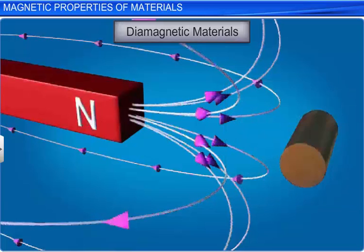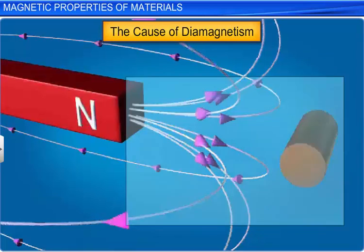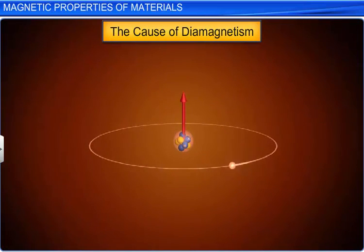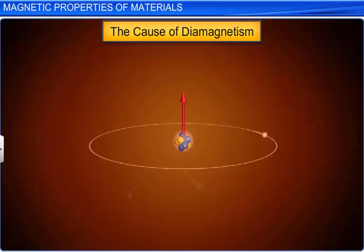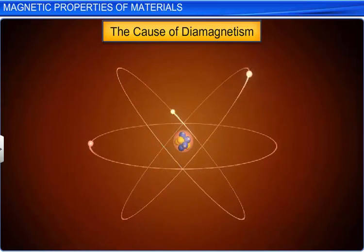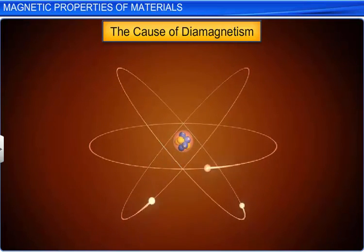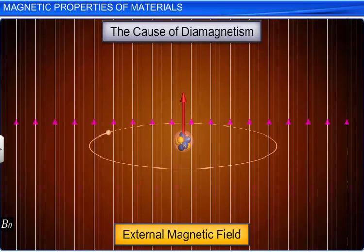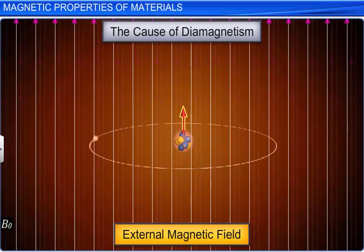Let us discuss the causes of diamagnetism. We know that the orbiting electrons around the nucleus in an atom are equivalent to current-carrying loops. These electrons possess an orbital magnetic moment. For a diamagnetic material, the resultant magnetic moment of all the electrons in an atom is zero. When the diamagnetic material is placed in an external magnetic field, due to induced current, the movement of electrons for which the orbital magnetic moment is in the same direction as that of the external magnetic field is slowed down and the orbital magnetic moment of the electron decreases.